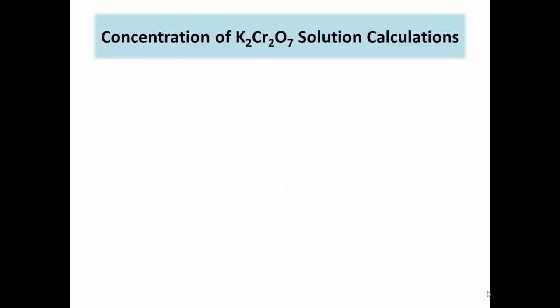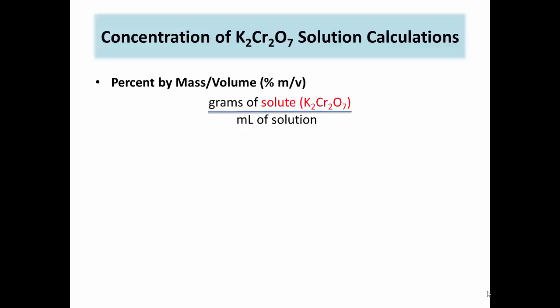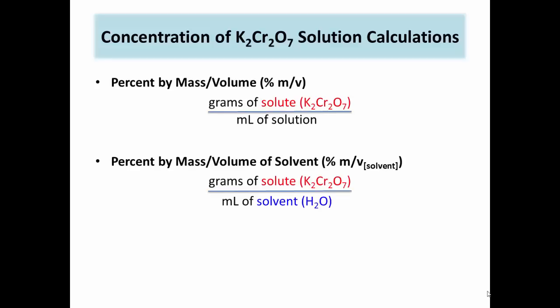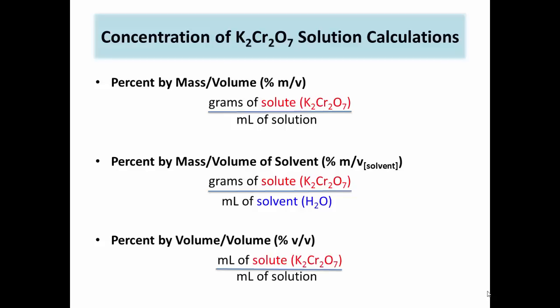There are also multiple percent by volume calculations. Percent by mass over volume is the ratio of grams of solute to milliliters of total solution. Percent by mass over volume of solvent is the ratio of grams of solute to milliliters of solvent. Percent by volume over volume is the ratio of milliliters of solute to milliliters of solution. These are calculated by dividing the grams of solute or volume of solute by the volume of solution or solvent, as shown on the slide.